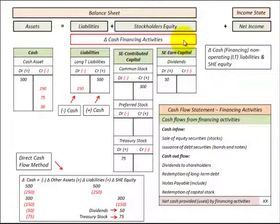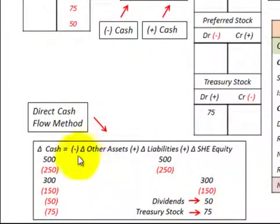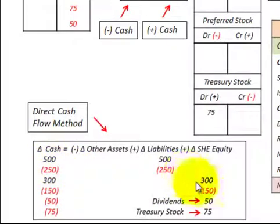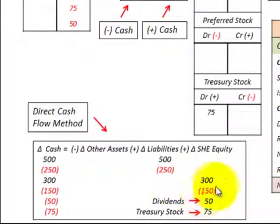Looking at our change in cash flow for financing activities, those would be our non-operating long-term liabilities and shareholders' equity. An increase in the change in liabilities transfers over to an increase in the change in cash, and a decrease in liabilities transfers over to a decrease in cash. The same applies to our shareholders' equity accounts — any increases translate to a cash increase, and any decreases would reduce cash.